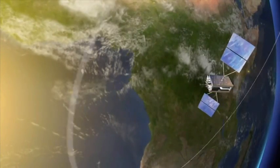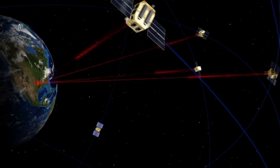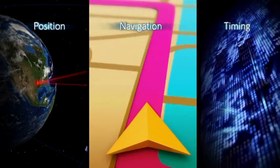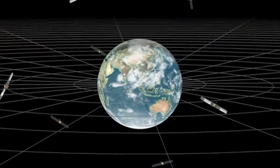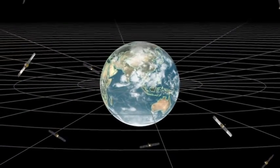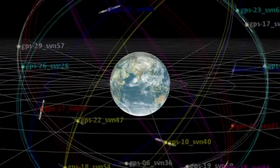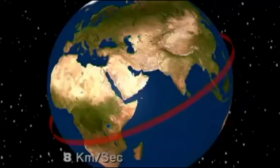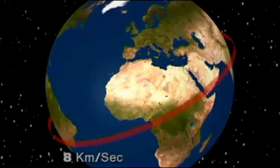GPS is a space-based position, navigation and timing system. The GPS constellation includes more than 24 satellites, arranged into six equally spaced orbital planes surrounding the Earth.